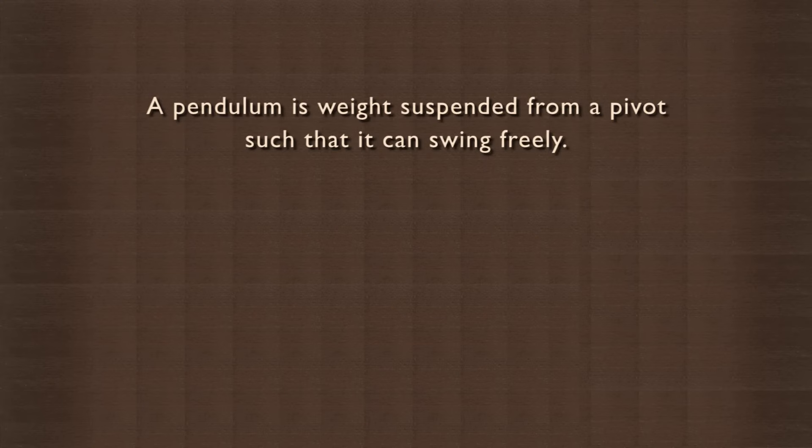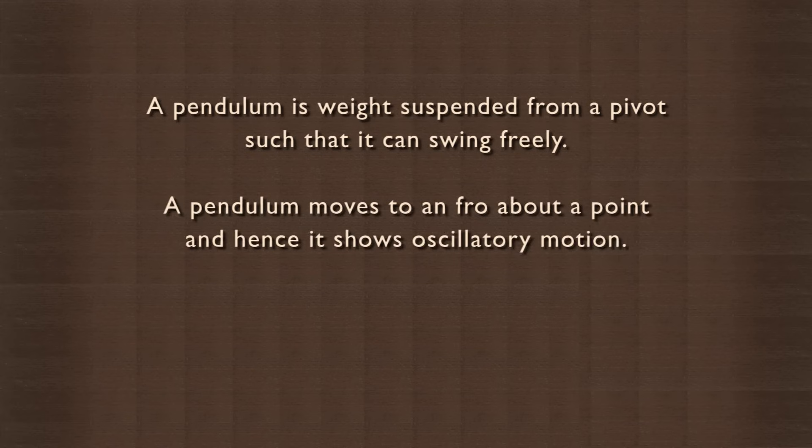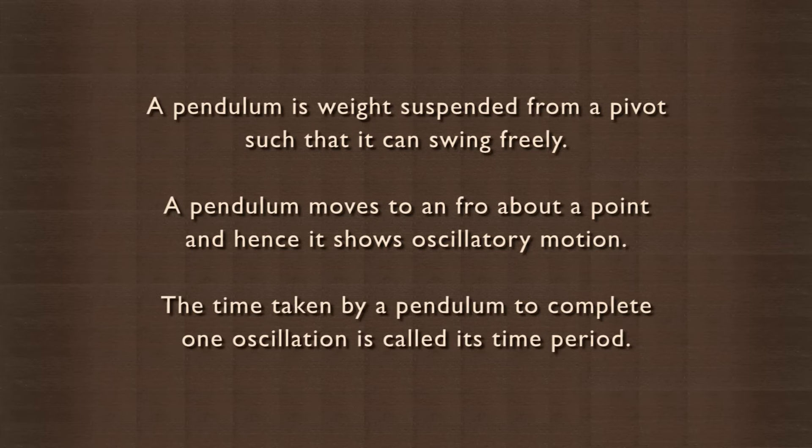A pendulum is simply a weight suspended from a pivot such that it can swing freely. A pendulum moves to and fro about a point, and hence it shows oscillatory motion. The time taken by a pendulum to complete one oscillation is called its time period. Let us calculate the time period for a given pendulum.